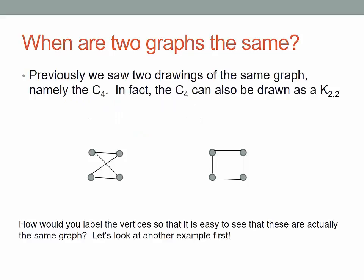So in a previous exercise or example, we saw that these two graphs are the same graph. One is a C4 and one is the complete bipartite K22. But in the case where we have four vertices, these two graphs are the same.